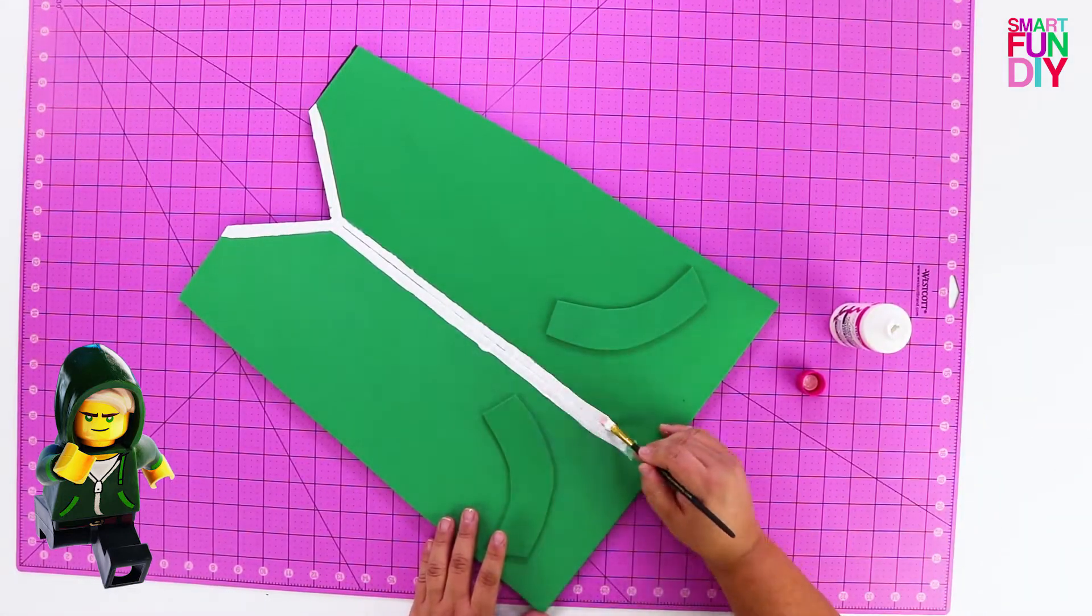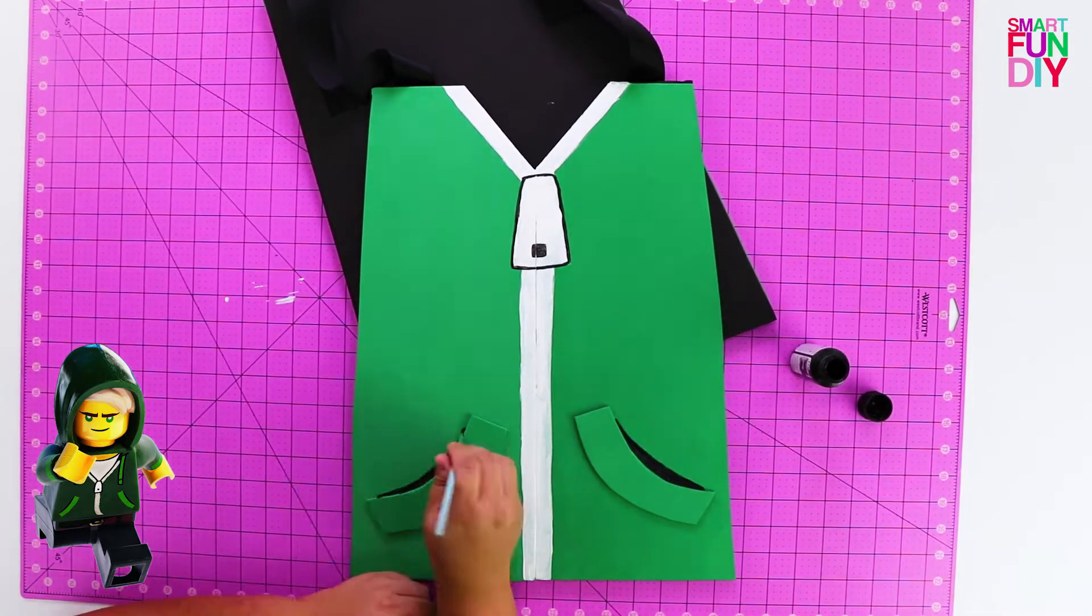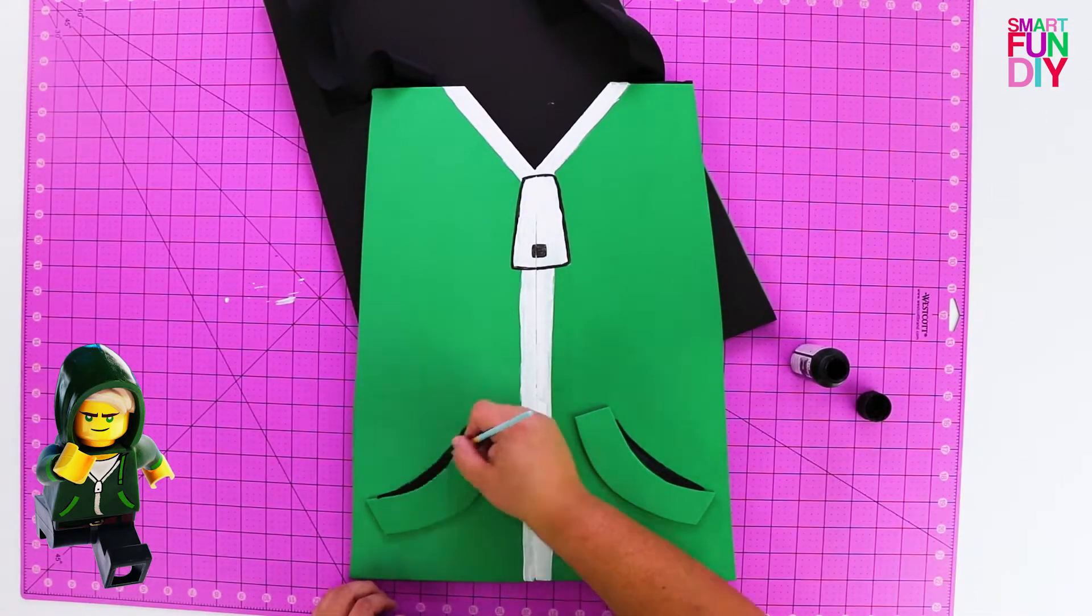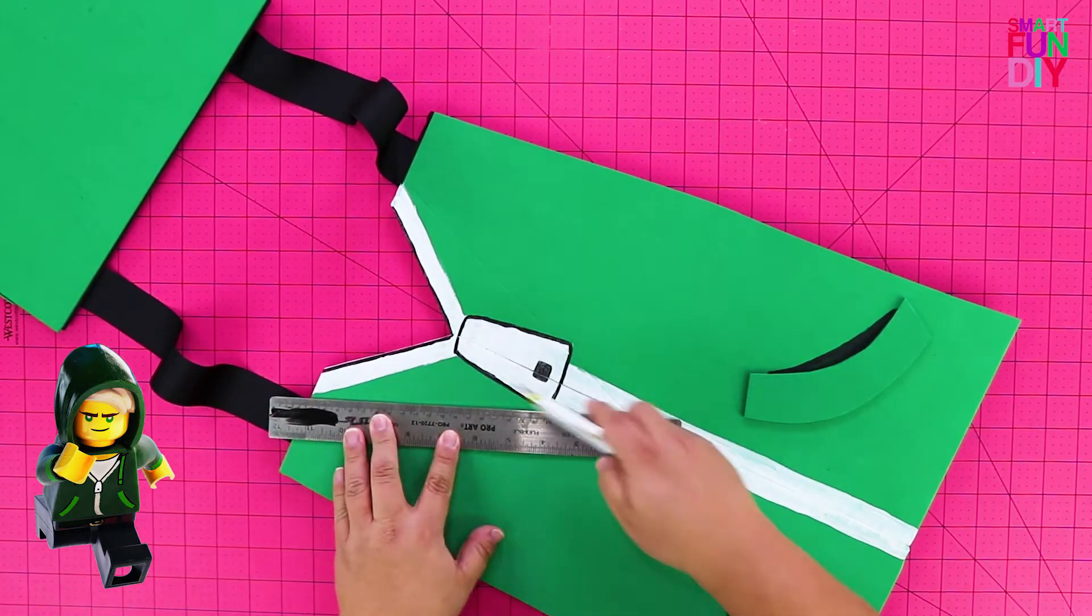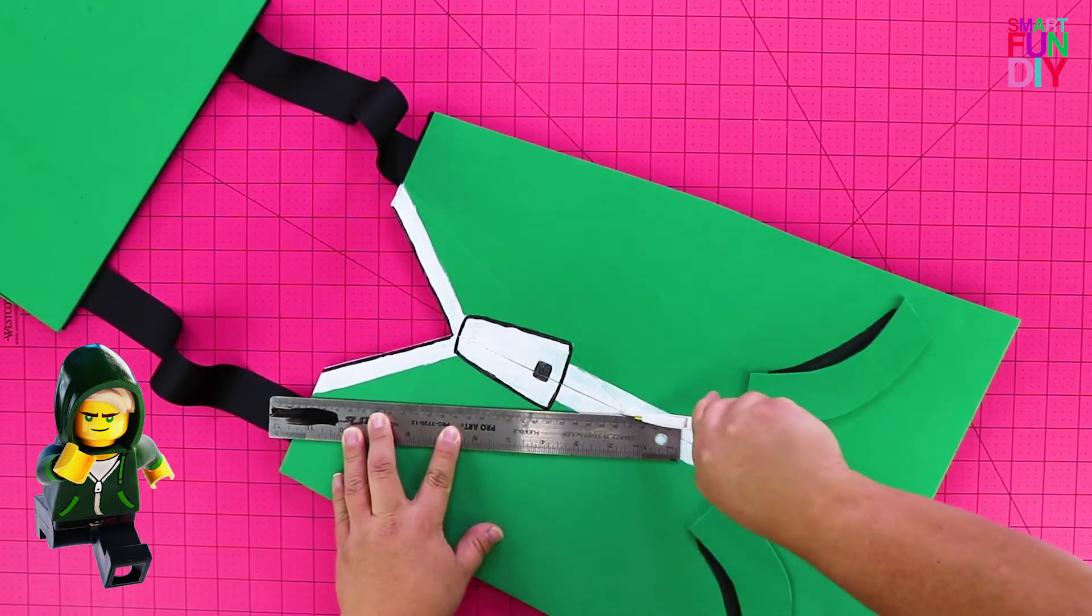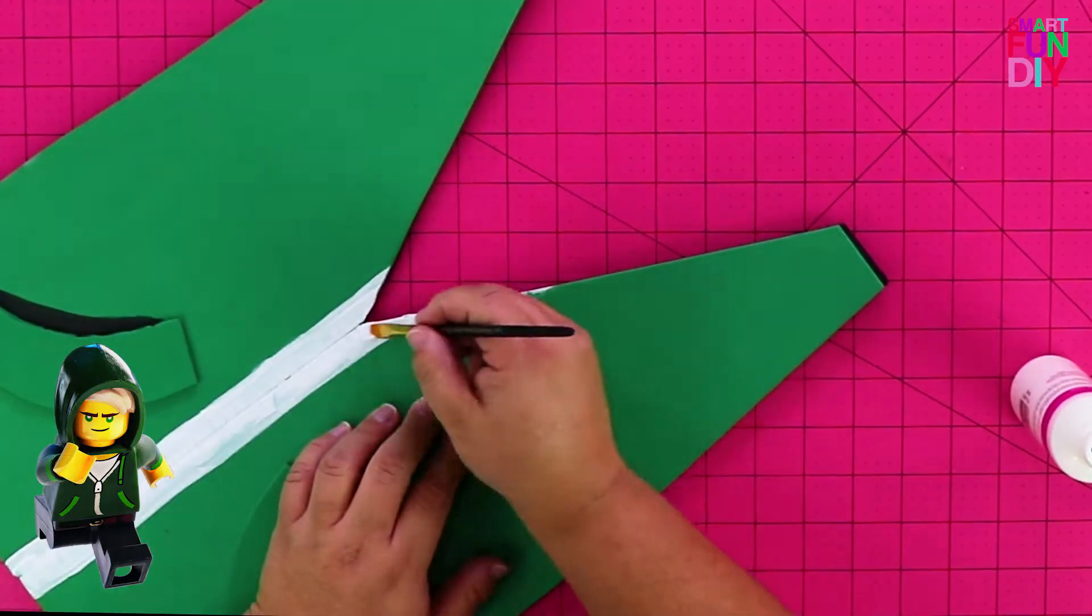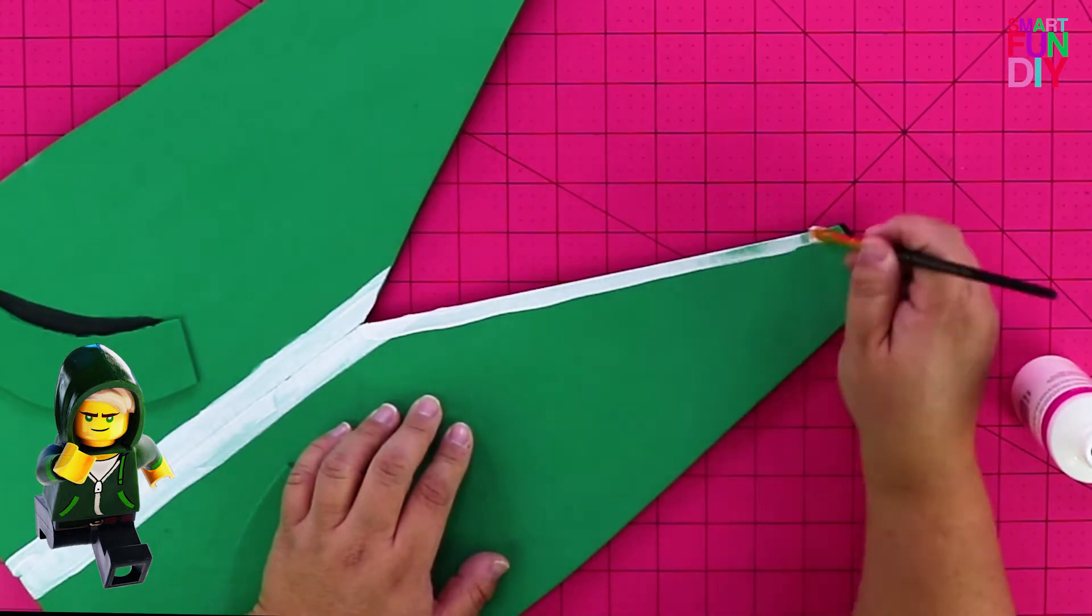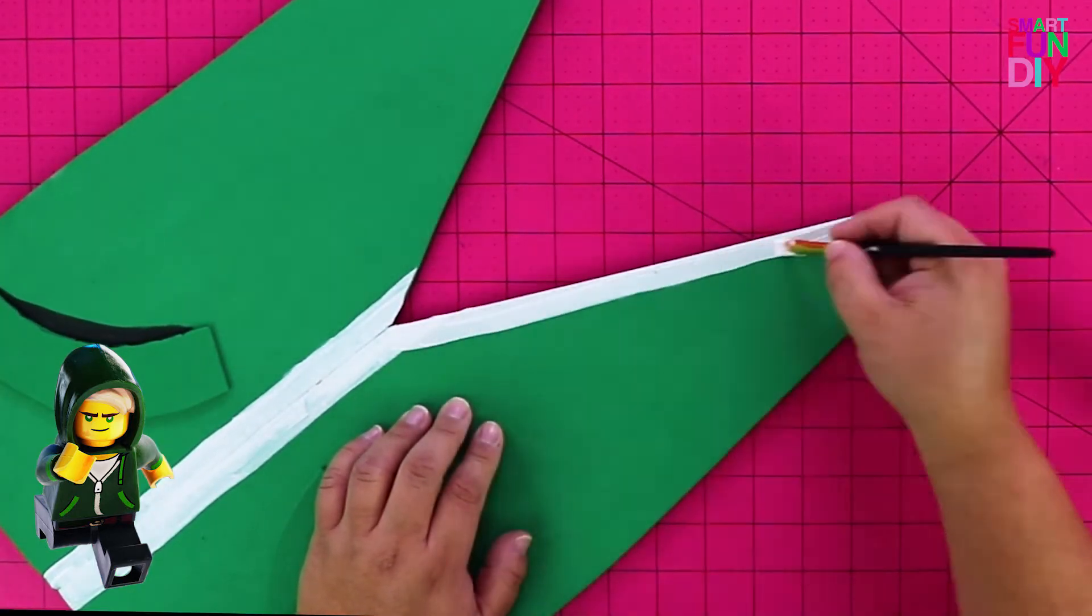Next, you're going to add some details with paint. You can use acrylic paint or fabric paint to do that. I am going to be adjusting this. Here you can see, I cut the neck hole too small. I just grabbed the foam core board and a craft knife with a ruler and cut the slot bigger, and then repainted the details with some fabric paint.